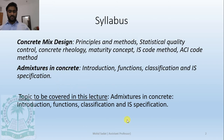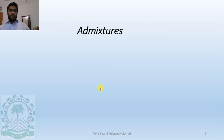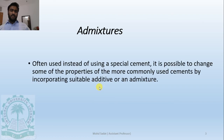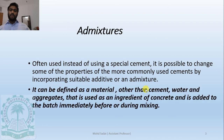As we have already covered in previous lectures, we use special cement for special purposes. Instead of using special cement, we can use additives or admixtures to achieve the same desired properties. Admixtures can be defined as a material other than cement, water, and aggregate that is used as an ingredient of concrete and is added to the batch immediately before or during the mixing.